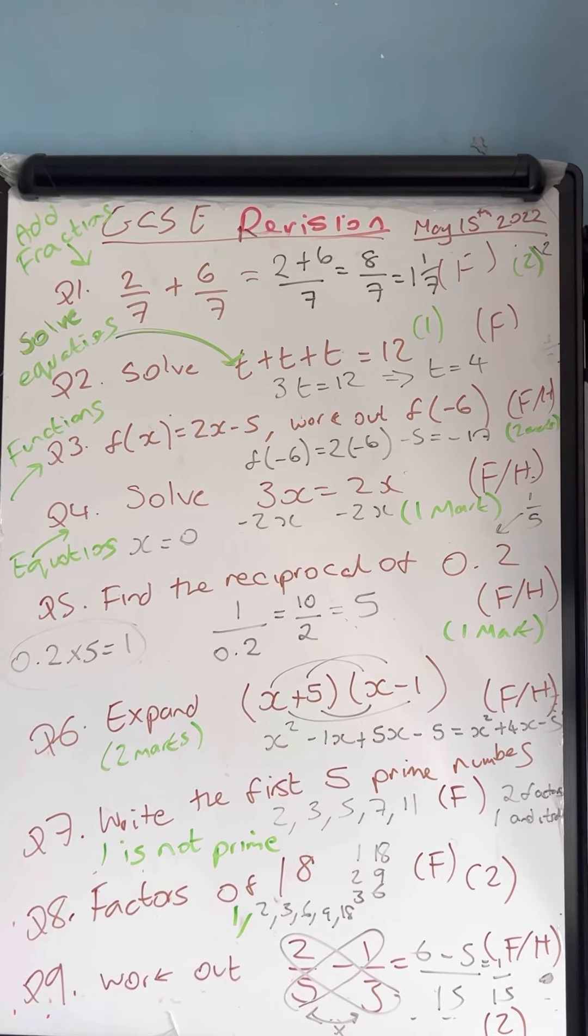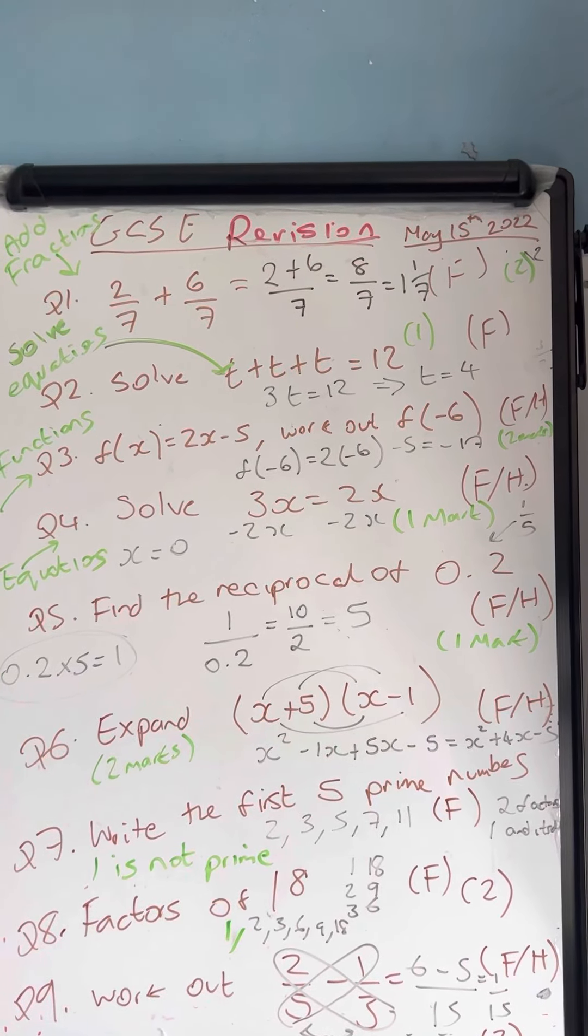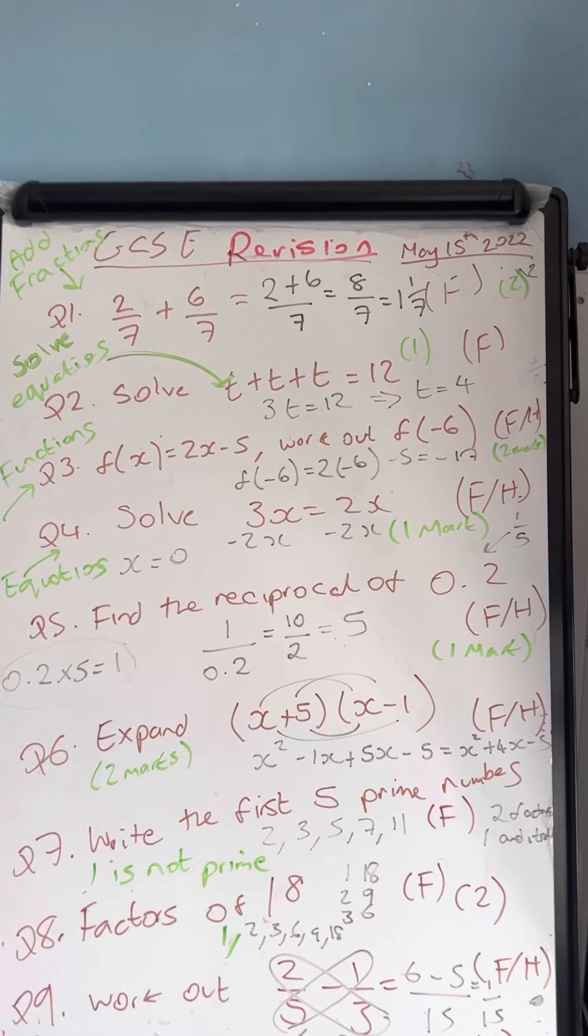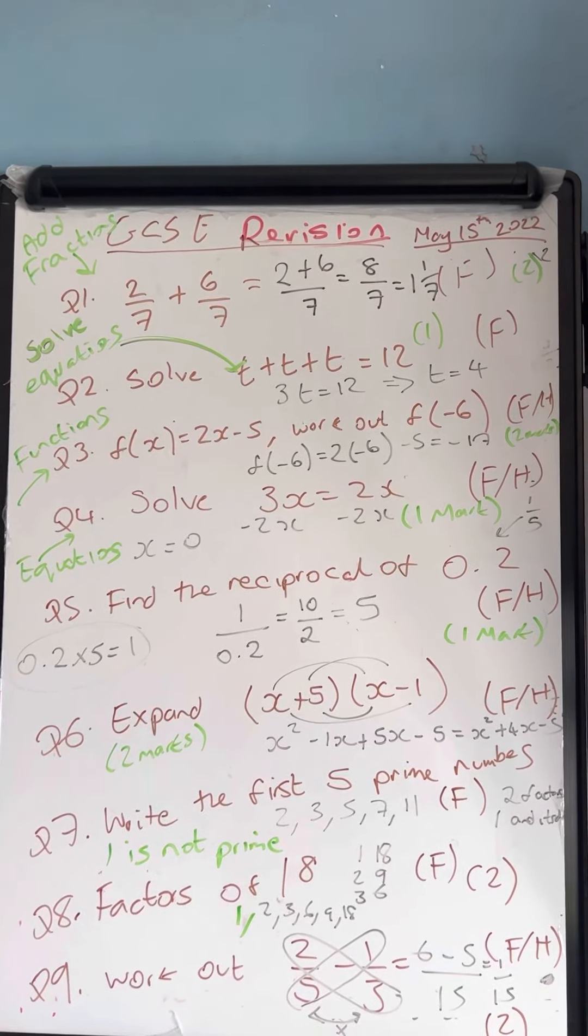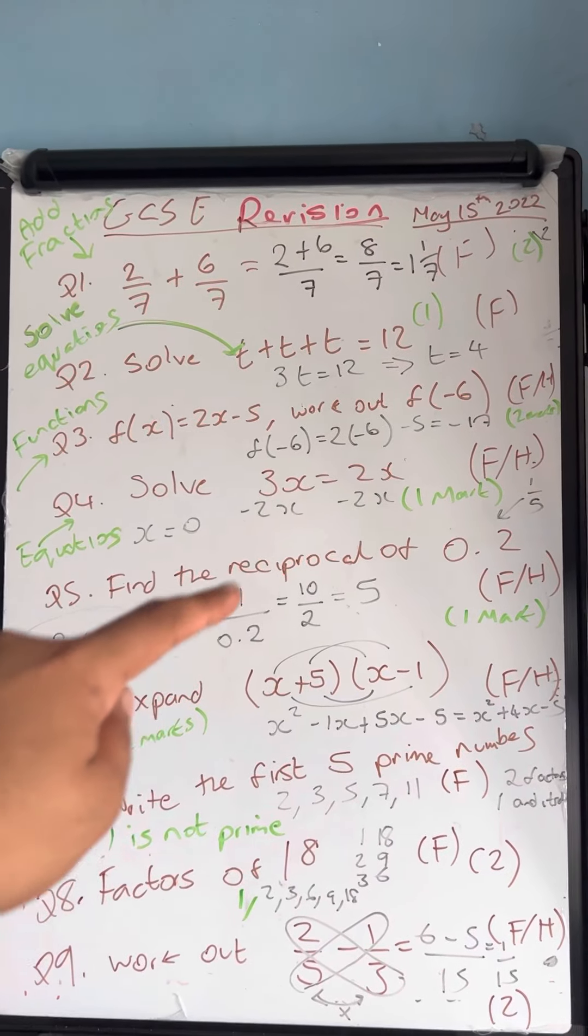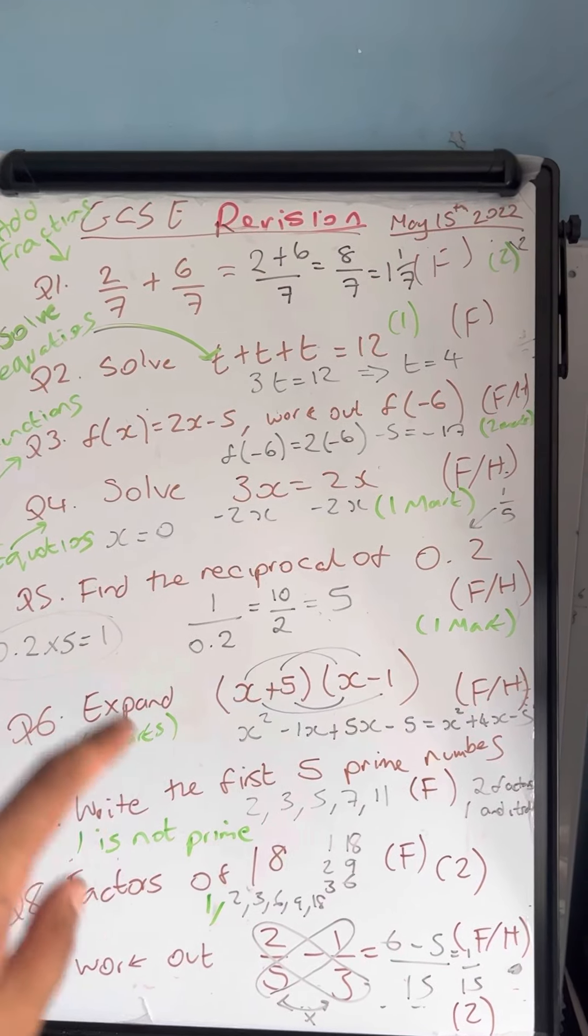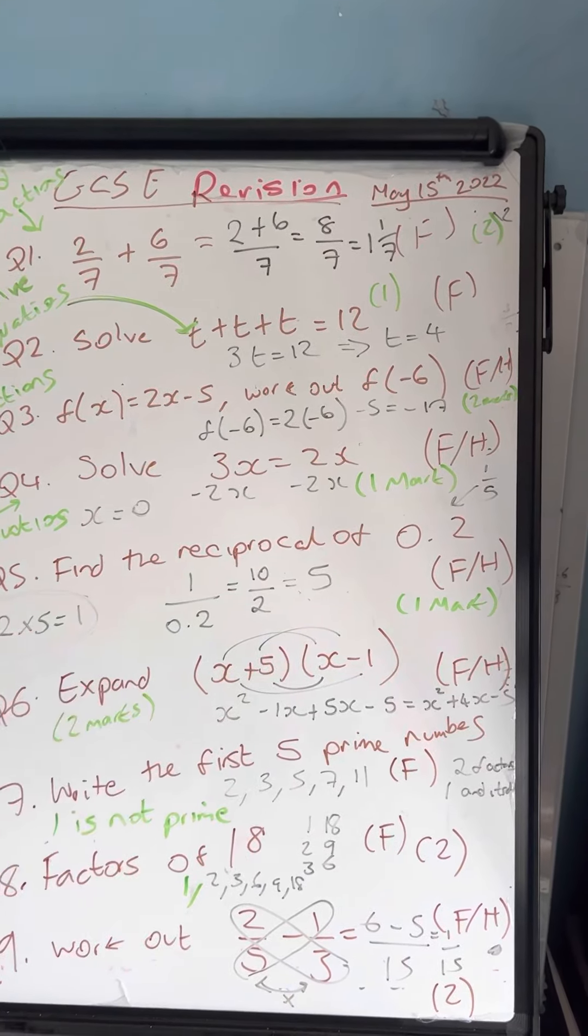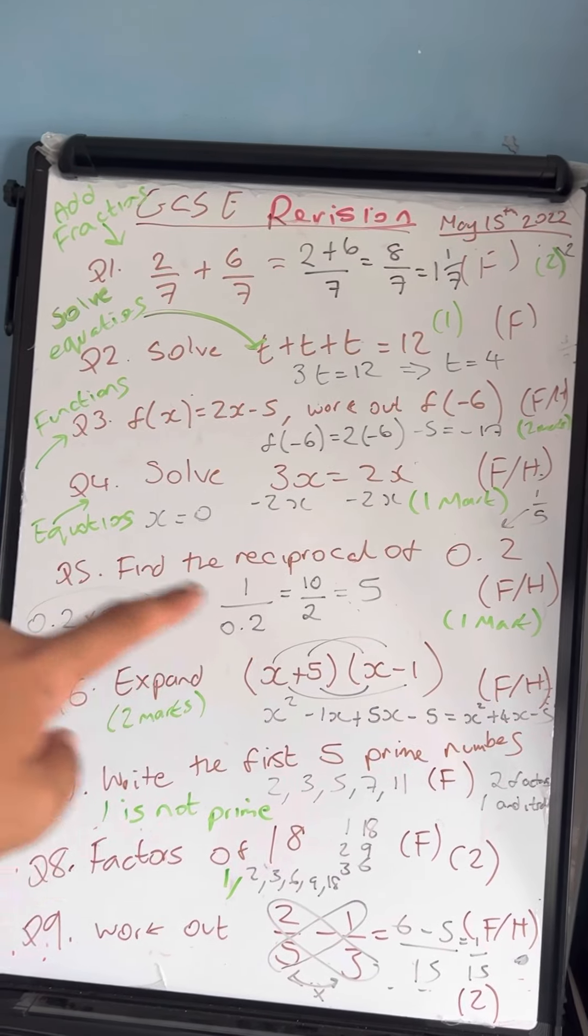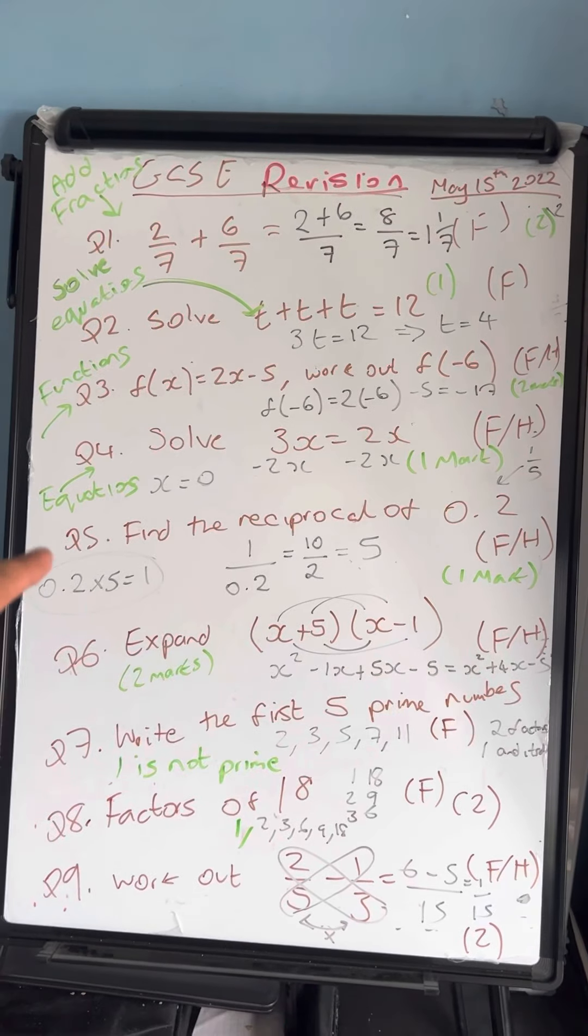This is question number five. Find the reciprocal of 0.2. Reciprocal just means 1 over that number, so 1 divided by 0.2. What I've done here is I've multiplied the fraction, top and bottom, by 10, so I get an equivalent fraction of 10 halves, or 10 out of 2. 10 divided by 2 is 5. Another way of checking your answer: if you multiply the fraction by its reciprocal, you will always get 1. So that is definitely correct.